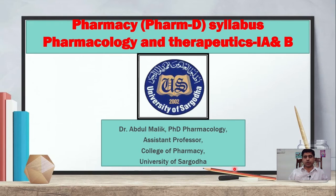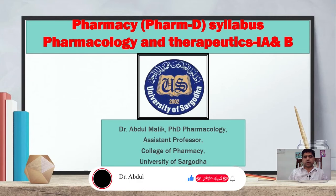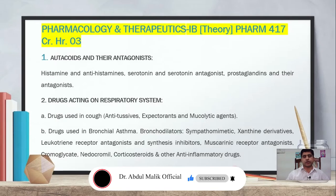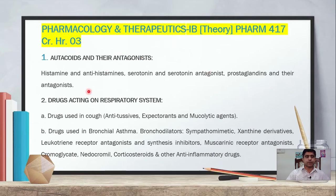Pharmacology and Therapeutics 1B — the fourth semester, second professional. I have also explained Pharmacology and Therapeutics 1A in a previous video. Now coming to the scheme: Pharmacology and Therapeutics 1B theory, THRM 1417, credit hours 3. This is written in the HEC syllabus.